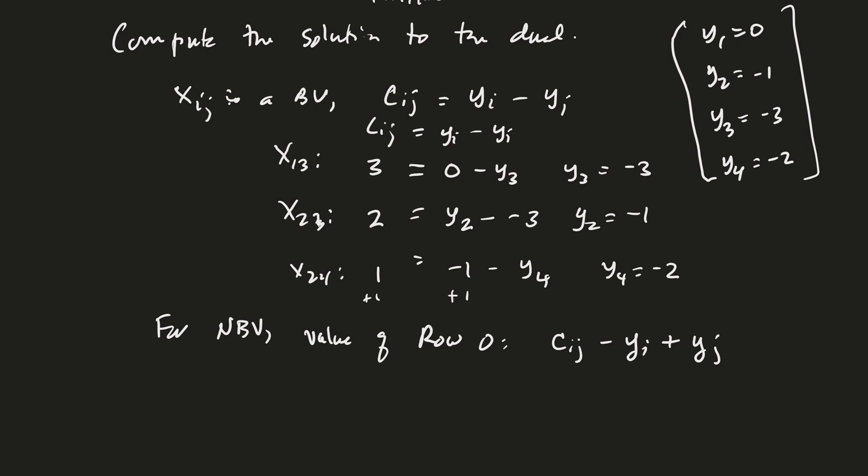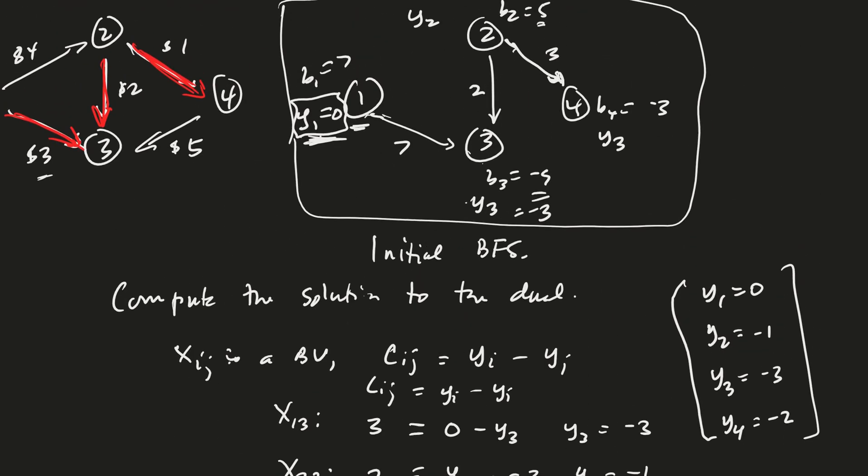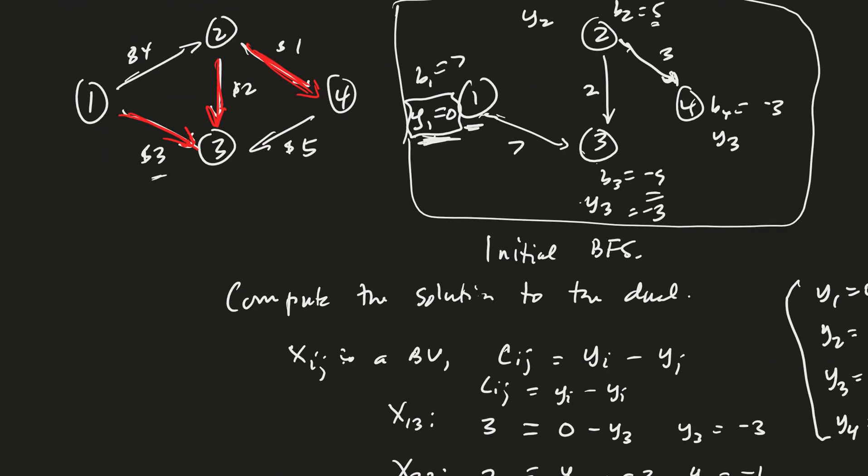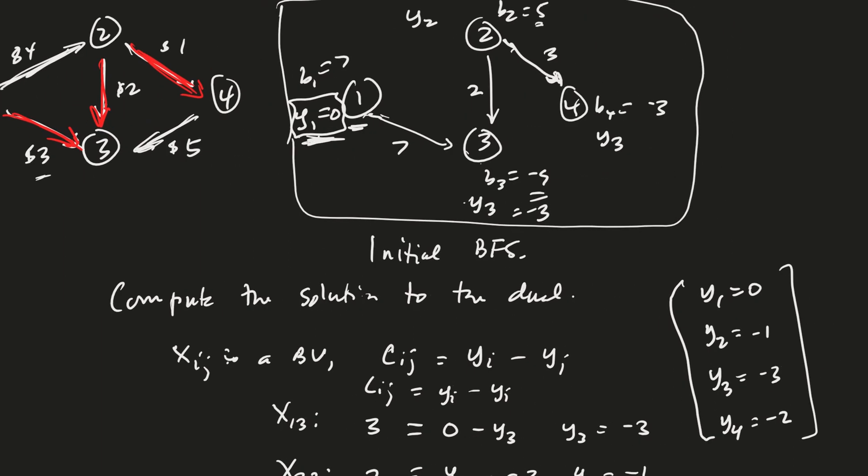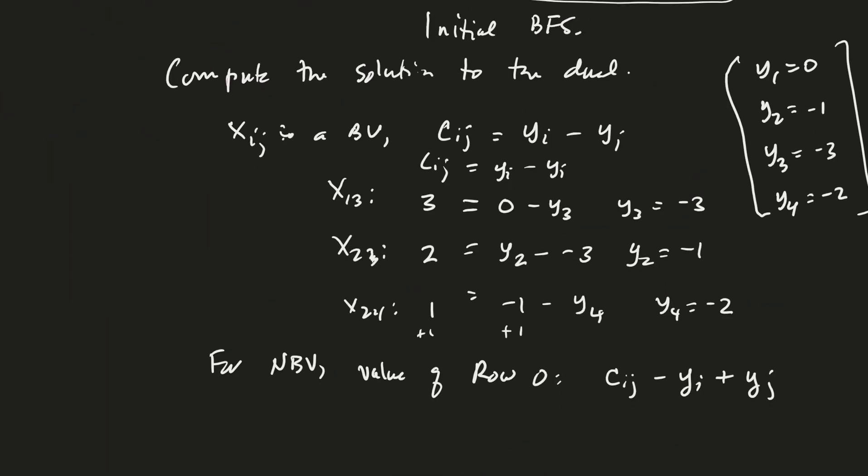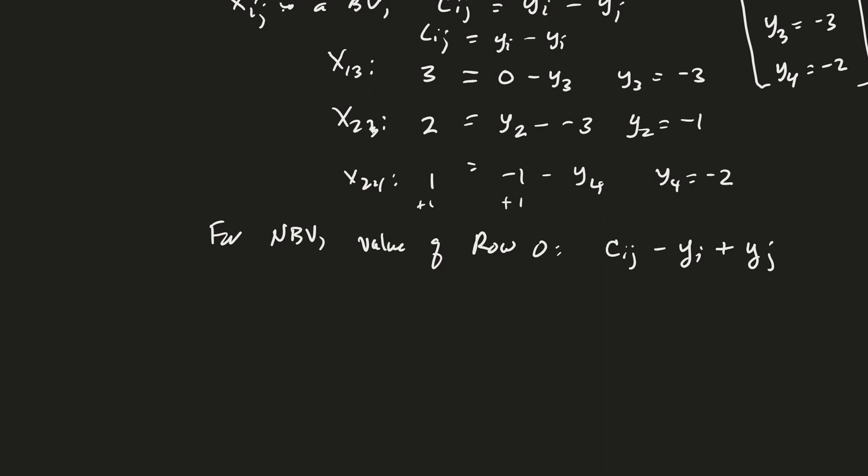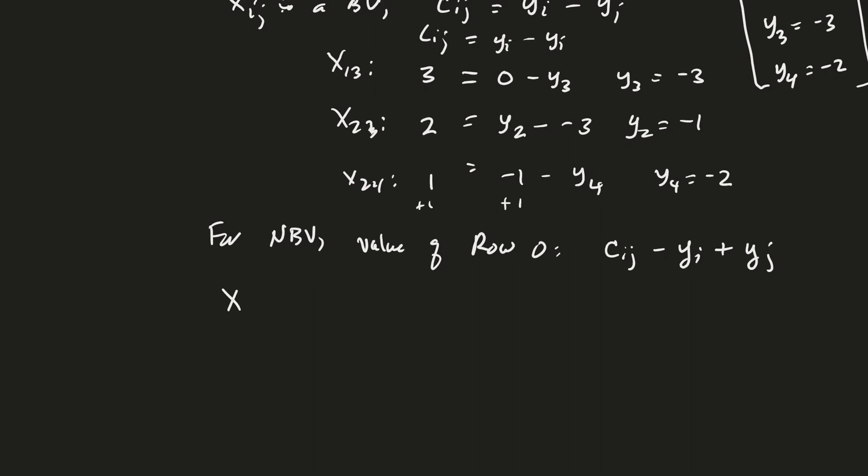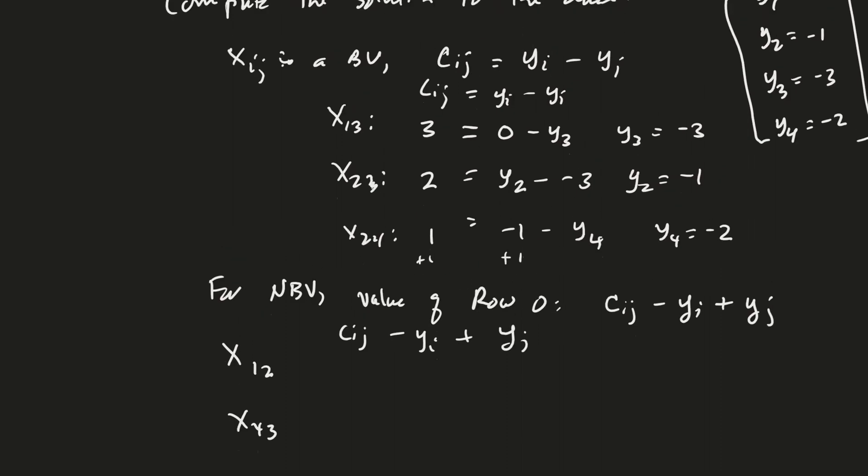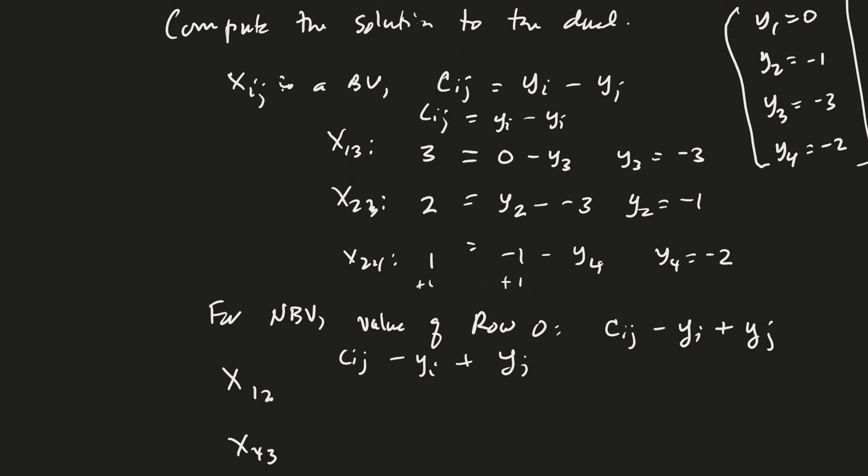And so what are the non-basic variables in this case? They're the edges that were not connected up here. So that's going to be 1, 2 and 4, 3. So there's only two variables that are not basic. And again, that was X of 1, 2 and X4, 3. Good. And then I'm just writing my formula up here so I don't forget what it was. And I've got my Ys over here if I need them.